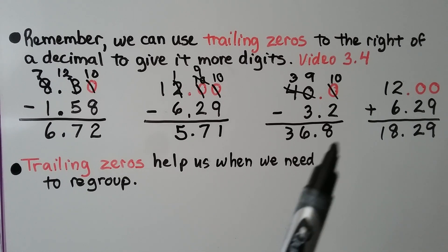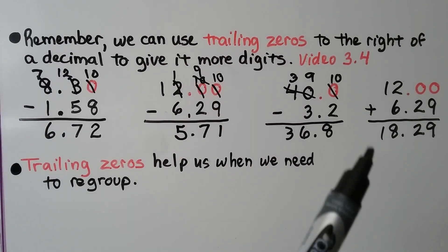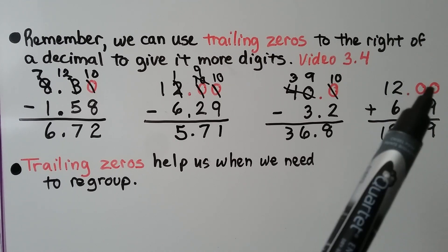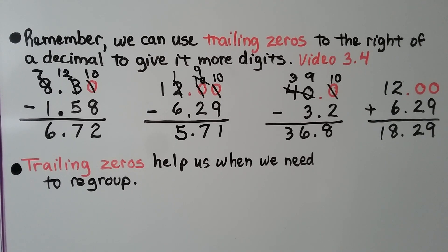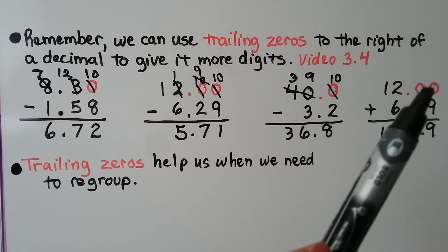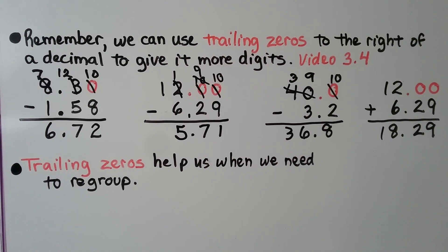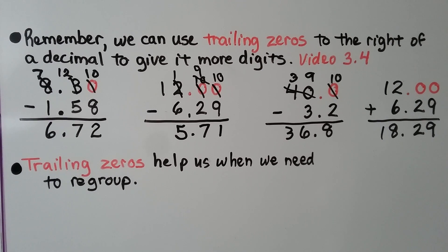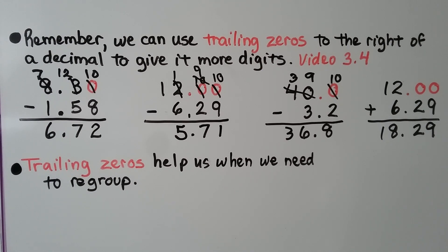And even for addition, if we're adding 12 plus 6.29, we can put a decimal point and 2 trailing zeros there so that we have the same amount of digits in each, to the right side of the decimal point. So trailing zeros help us when we need to regroup. We first learned about them in video 3.4, and that's linked in the description if you missed it.